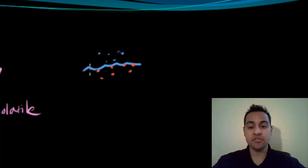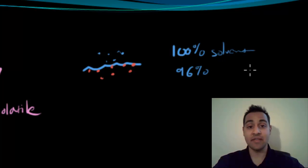If I go and dissolve particles into that solvent, I've decreased the relative amount of solvent available to enter the vapor phase. I haven't changed the actual amount of solvent, but by going from 100% solvent molecules to maybe 96%, for example, or 95% or 94%,